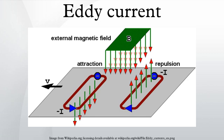The magnitude of the current in a given loop is proportional to the strength of the magnetic field, the area of the loop, and the rate of change of flux, and inversely proportional to the resistivity of the material.